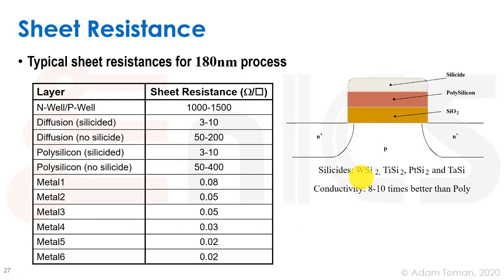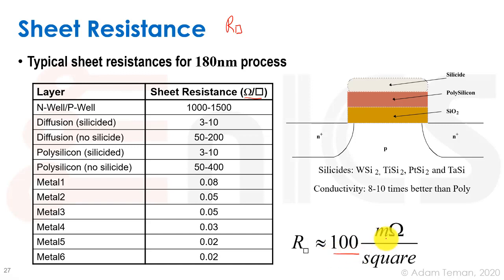The sheet resistance — R-square — is given in units of ohms per square, and it should be specified for each layer in a process. As a rule of thumb, R-square is about 100 milliohms per square for a metal conductor. In one example process, Metal 1 had 0.08 ohms per square, which is about 80 milliohms. Higher metal layers get lower resistance per square because their height is larger, even if they use the same metal material.